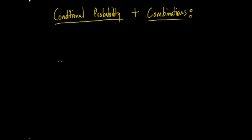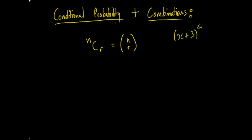Now moving on to combinations. Combinations are a way of identifying how many different possibilities there are when ordering or selecting from different sets of numbers, given that order doesn't matter. You represent it as NCR, which can also be written in another notation. You've probably already done this in earlier chapters when expanding expressions like (x+3)^4 using binomial coefficients. It does relate to probability as well.